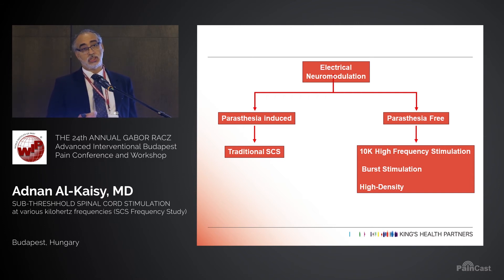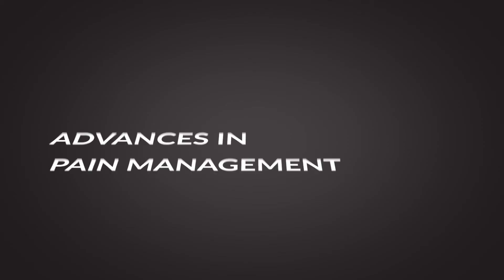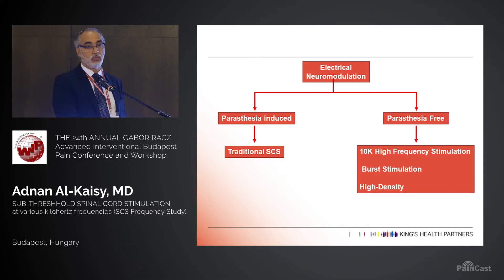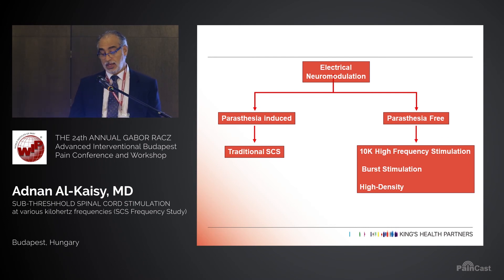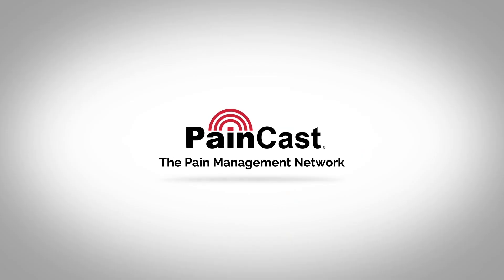Electrical neuromodulation can be subclassified into traditional or conventional spinal cord stimulation, where you feel paresthesia overlapping where the pain is, and newer waveforms where there is an absence of paresthesia. These include 10 kilohertz stimulation, high density stimulation, or subperception stimulation.